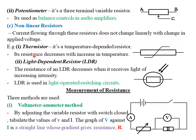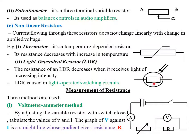The second type of nonlinear resistor is what we call a light-dependent resistor, denoted as the LDR. The resistance of an LDR decreases when it receives light of increasing intensity. So when there is no light, their resistance is very high, but when it receives light, their resistance reduces so that they can conduct electricity. The LDR is used in light-operated switching systems. In an electrical circuit, this is the symbol for a light-dependent resistor.